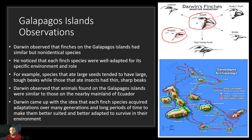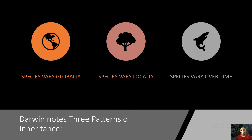Darwin observed that animals found on the Galapagos Islands were similar to those on the nearby mainland of Ecuador. He came up with the idea that each finch species acquired adaptations over many generations and long periods of time to make them better suited and better adapted to survive in their environment. Just like people, when they go to different areas or places, they make small adaptations to help them blend in and survive in that environment — going from one classroom to the next, one school to the next, or from one city to the next.